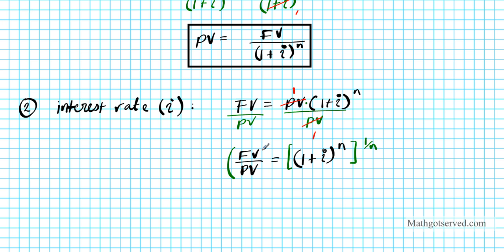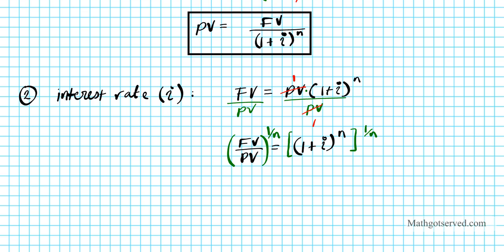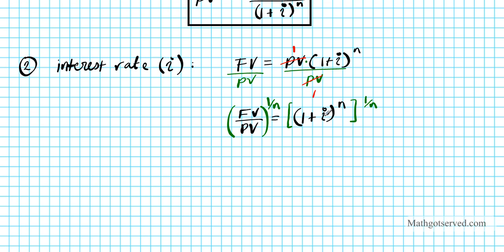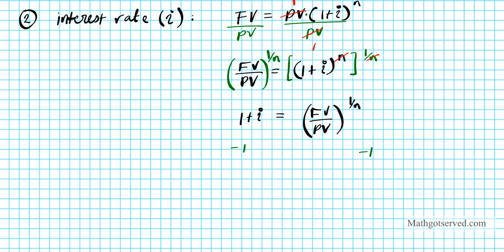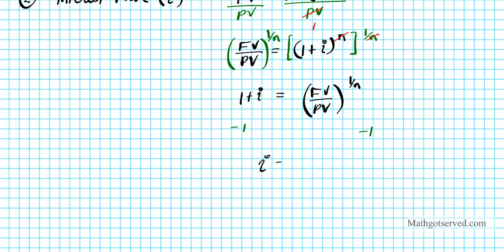I'll take the nth root of this whole expression and do the same on the left side to preserve equality. Using the power-for-power property of exponents, the n's divide out. So we're left with: 1 plus i equals the future value over the present value raised to the 1/n power, or the nth root of FV over PV. To finally isolate i, subtract 1 from both sides: i equals (FV/PV) raised to the 1 over n, minus 1. That's the formula for calculating your interest rate.